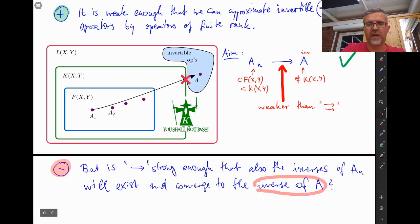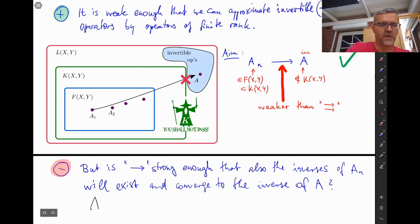to the inverse of A, which will of course lead to the solutions of these equations that are connected to A_N would exist and converge to the solution of our equation AX equals B. And let me already give you the answer.